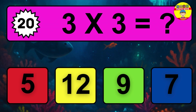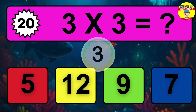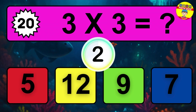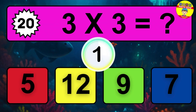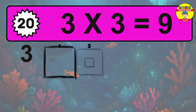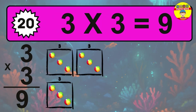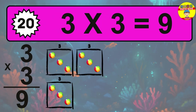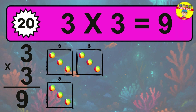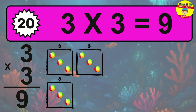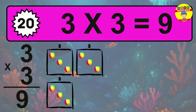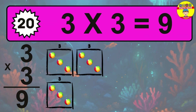Question 20. Three times three equals what? The answer is three times three is nine. To calculate, we have three groups with three balls each one. So how many balls do we have? Nine balls.